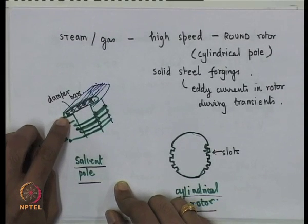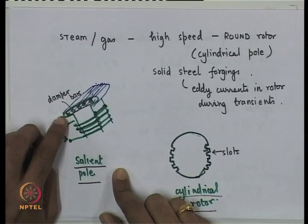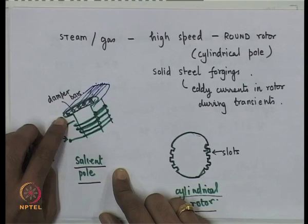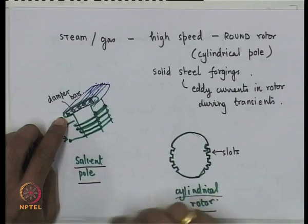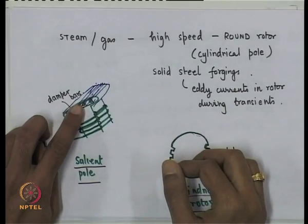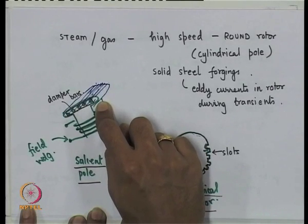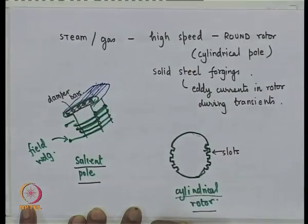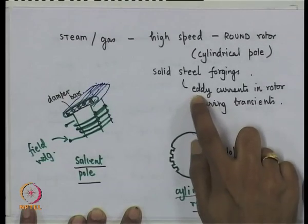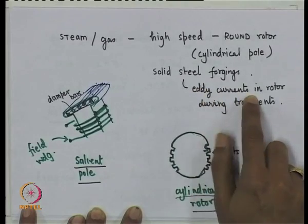The basic function of these damper bars is to damp out transients. Normally the flux created by the field winding, the three-phase rotating flux, and the rotary motion of the rotor are all at the same speed, so no EMFs are generated in the damper bars. But during transients, currents flow in them to damp out oscillations. In a cylindrical rotor machine, the solid steel body itself creates eddy currents which perform the same function.